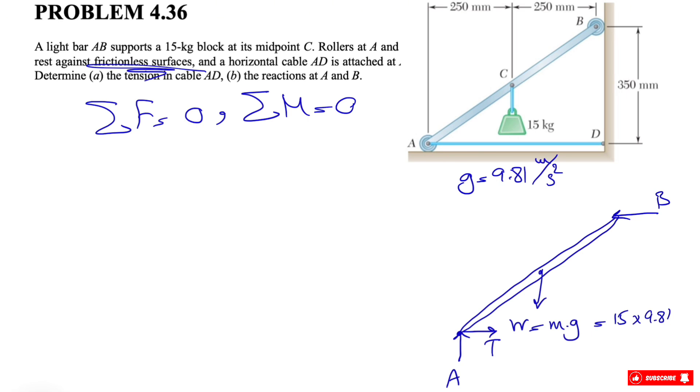So it makes sense again to start with the moment equation since we can get rid of some of the unknowns. Here we can see that at point A we have two unknowns, A and T. So if we start with that point, we can get rid of A and T and we can find B. So here, let's just figure out the weight. We'll have 147.15 Newtons if we multiply mass and the gravitational acceleration.